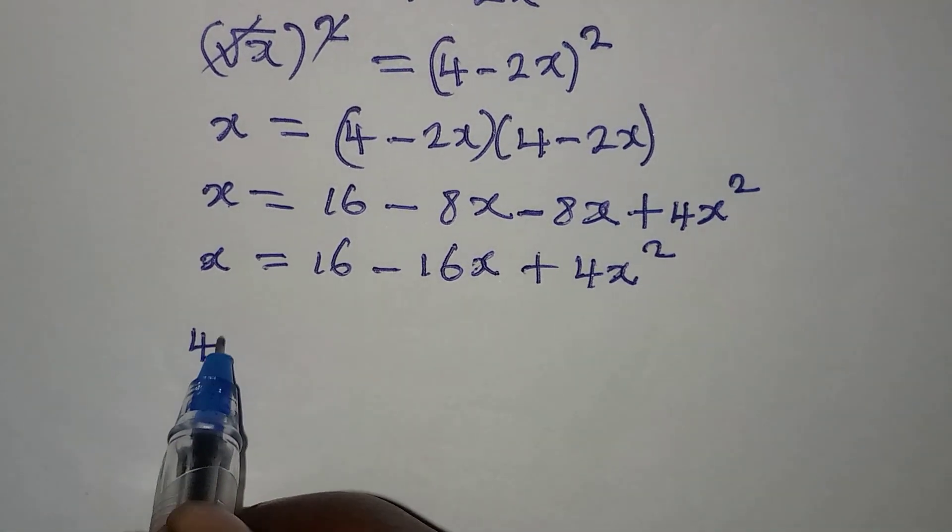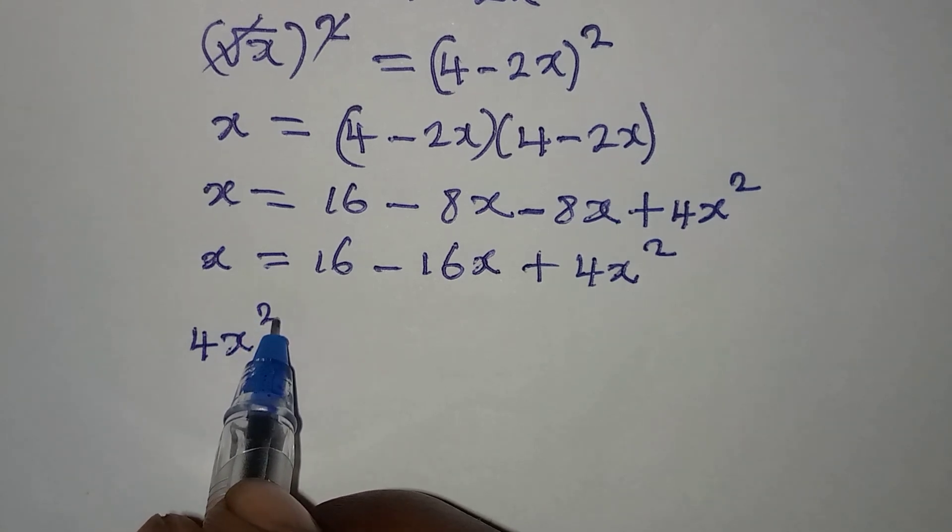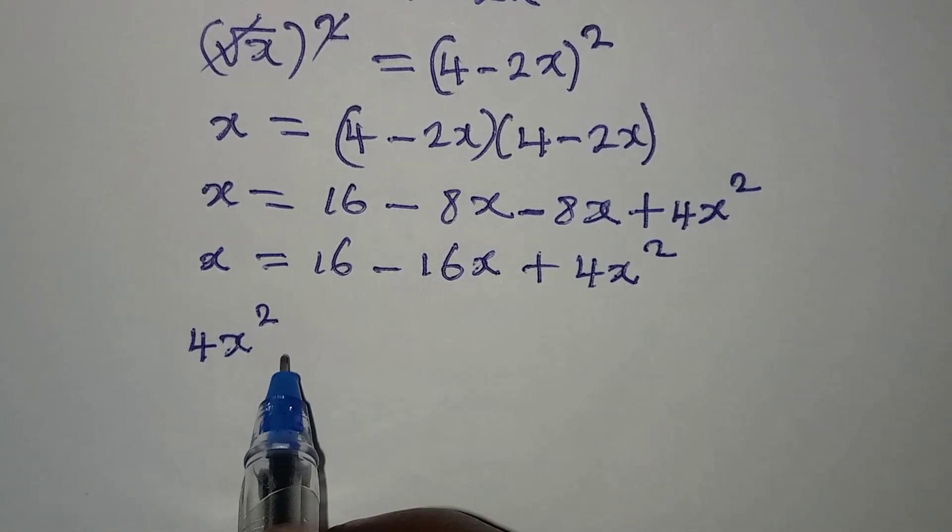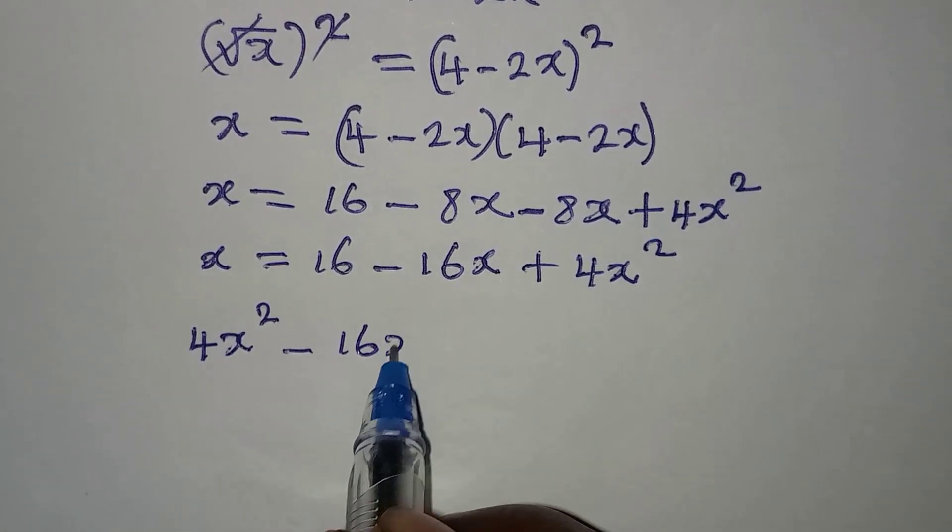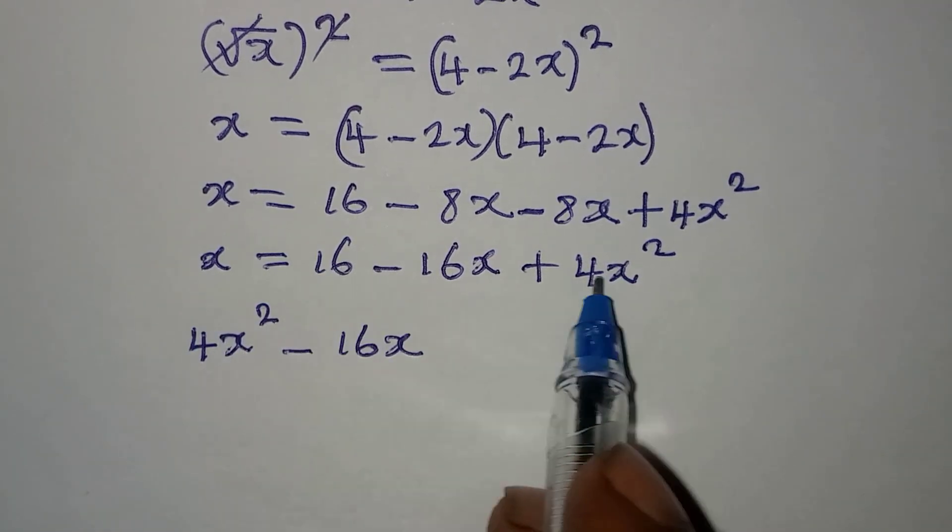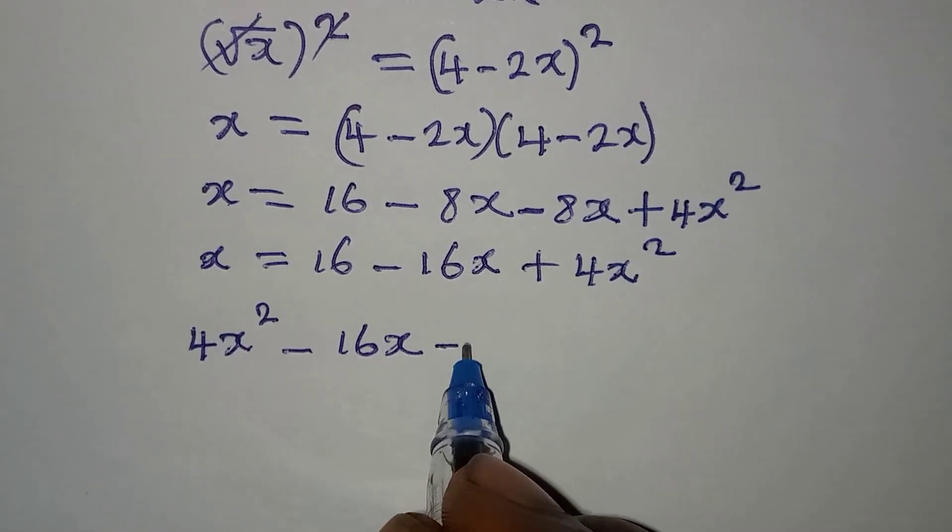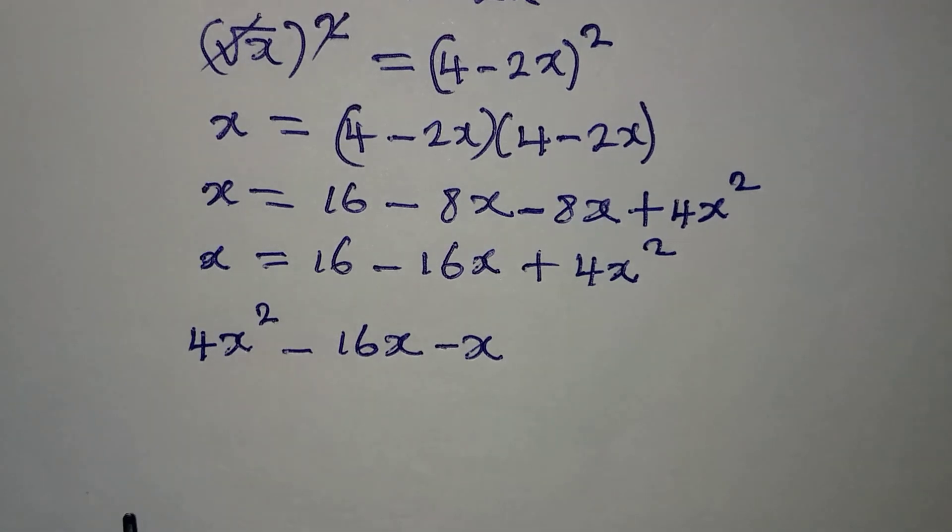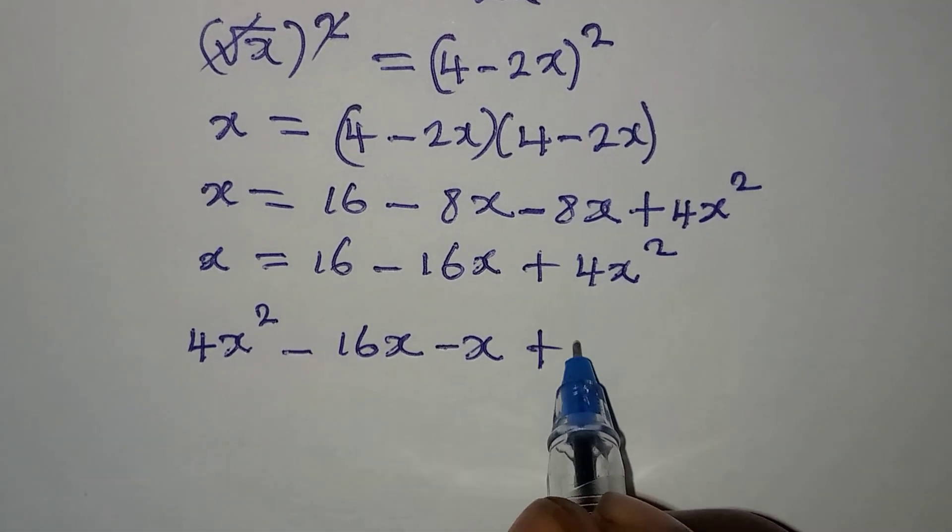I want to write 4x² first, then -16x. Since x is coming to meet with -16x, it becomes -17x, and then the +16 will appear.